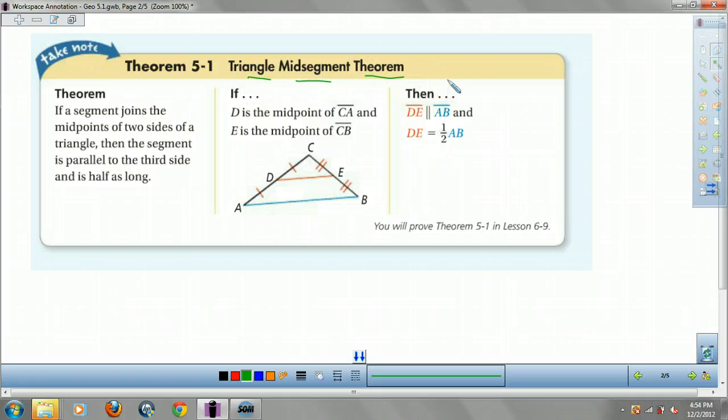I'm going to give you guys a second to write. Then I'll give you my story. What it says is if you have a midsegment, like DE, cuts each of the sides in half, then DE is half the size of AB.